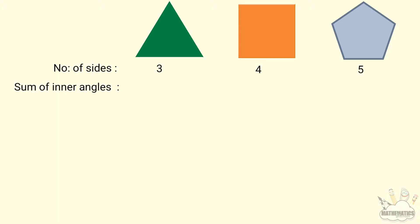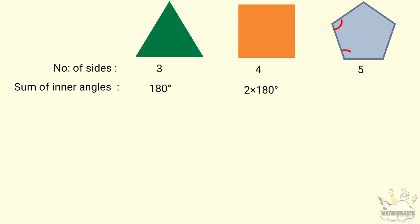We have the sum of inner angles. For the equilateral triangle, the sum of inner angles is 180 degrees. For the square, one diagonal divides it into 2 triangles, so the sum of inner angles is 2 × 180. For the regular pentagon, we have 3 triangles, so the sum of inner angles is 3 × 180.